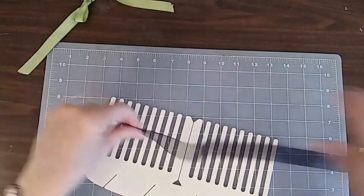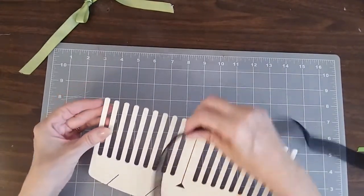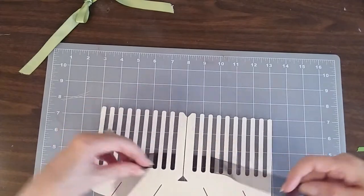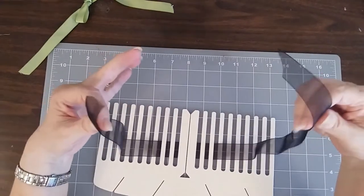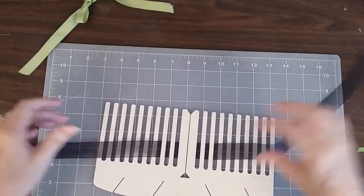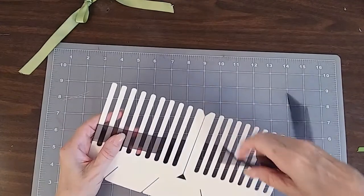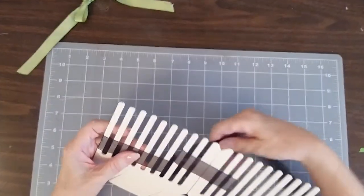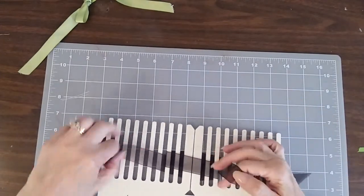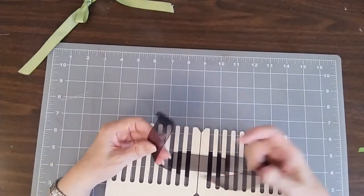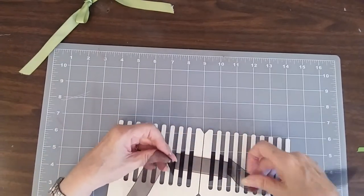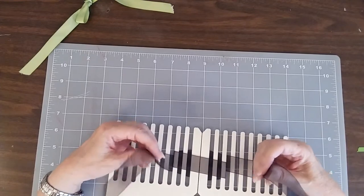Now to do a double bow, very similar. This was for a single bow. For a double bow, you're just going to loop it around again.